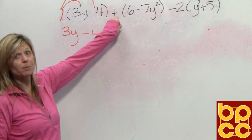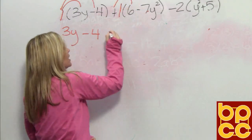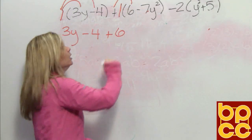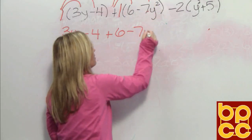We're going to move on to the second set of parentheses. Again, there's an invisible number in front. It's a 1. That 1 is positive. So we're going to do 1 times 6, get positive 6. We're going to do 1 times a negative 7y squared. Get negative 7y squared.